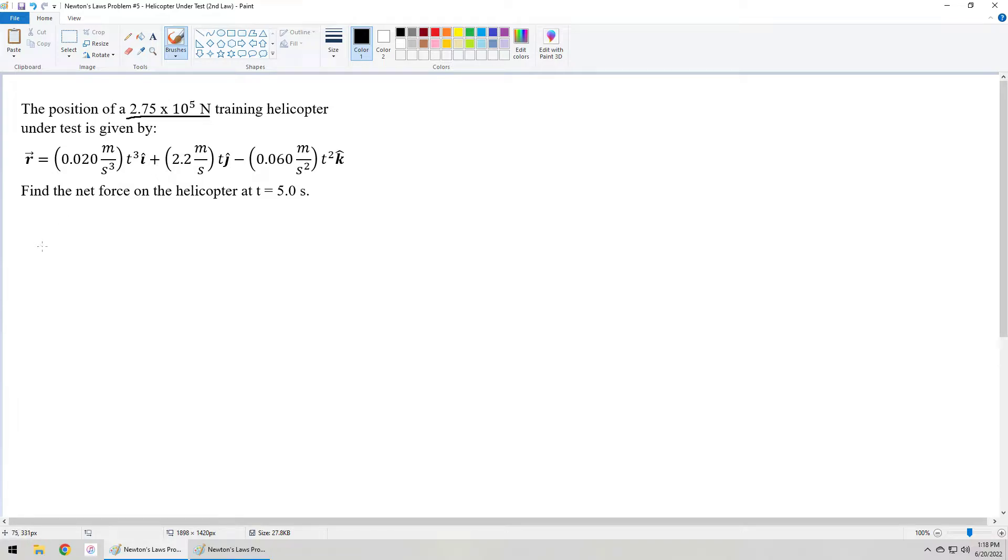this is actually the weight. So W is 2.75 E to the 5 Newtons. And when we're told that we need to find the net force, the net force comes from Newton's second law, and you've probably seen this before. If I write it as a vector equation, it is F equals MA, but F and A are vectors. And that's what we need to do.